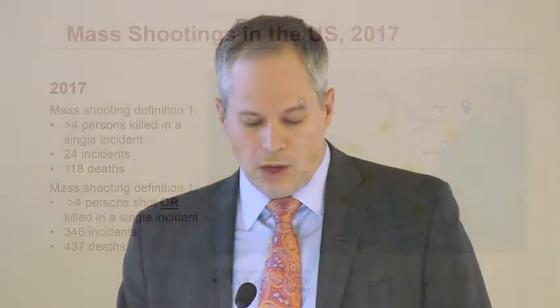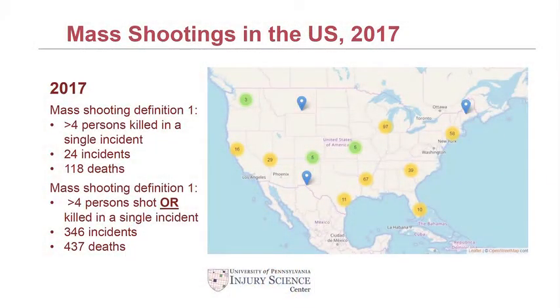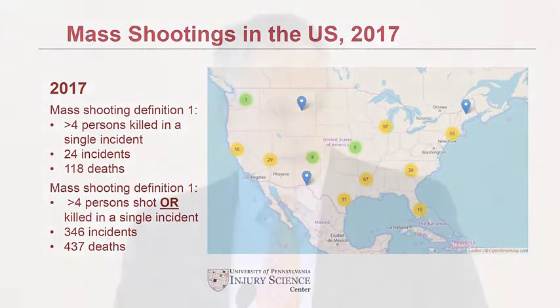This is a map of mass shootings in the United States in 2017. There are a couple of different definitions of mass shooting. In one, a mass shooting is an event where four or more persons are killed in a single incident — by that definition, there were 24 mass shootings and 118 deaths in 2017. Another definition counts events where four or more persons are shot or killed — by that definition, there were 346 mass shootings accounting for 437 deaths in 2017.